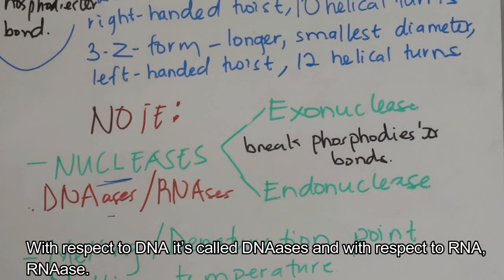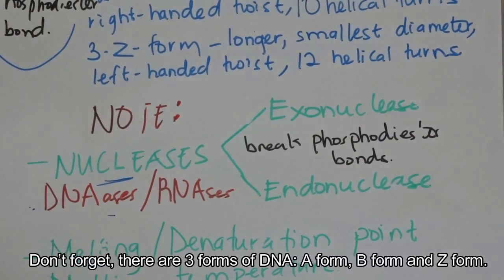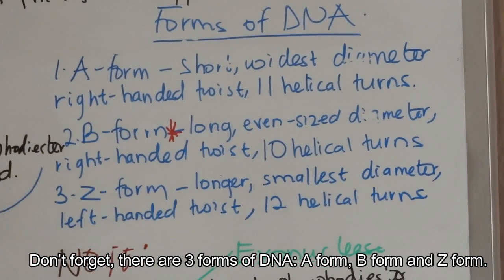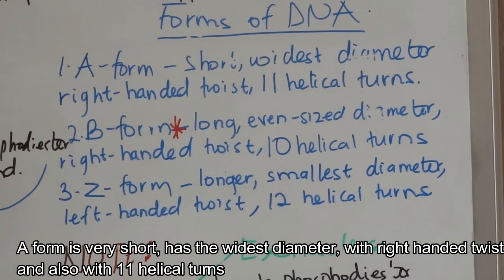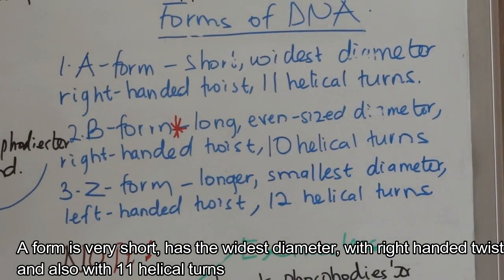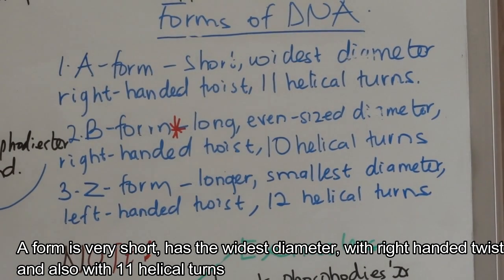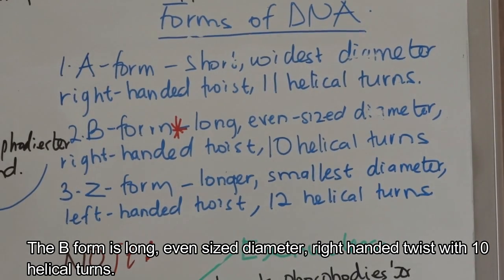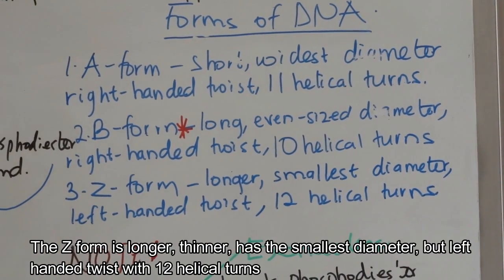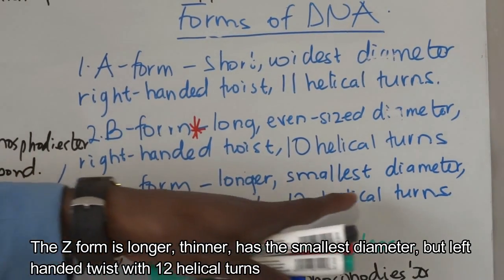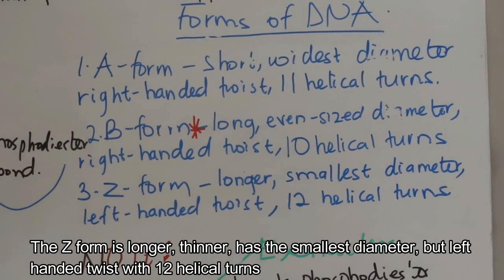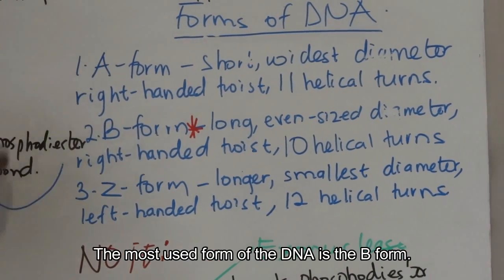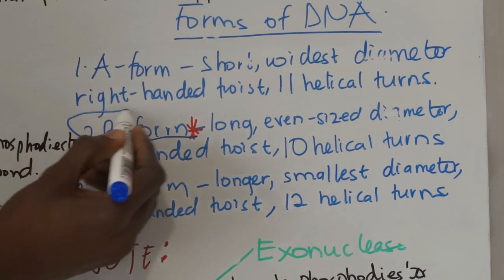Don't forget that there are three forms of DNA: we have the A form, the B form, and the Z form. The A form is very short, has the widest diameter, with a right-handed twist and 11 helical turns. The B form is long, has an even-sized diameter, right-handed twist, but with 10 helical turns. The Z form is longer, thinner, and has the smallest diameter, but it is left-handed with 12 helical turns.